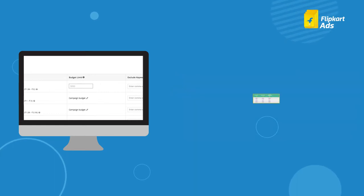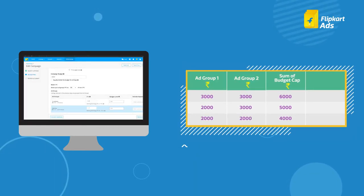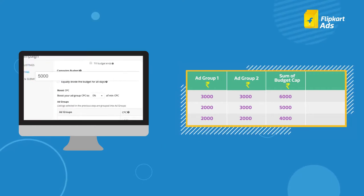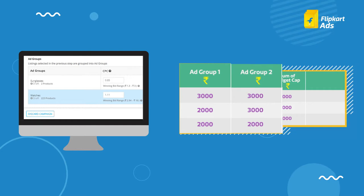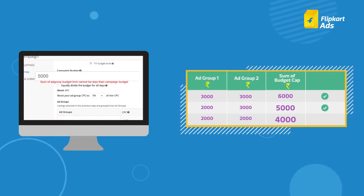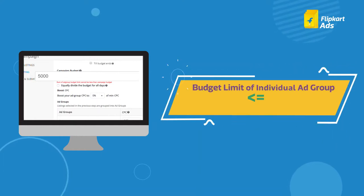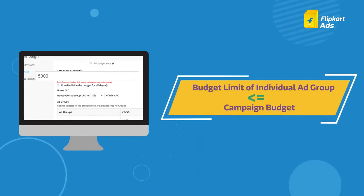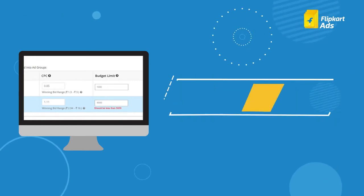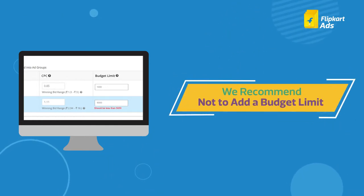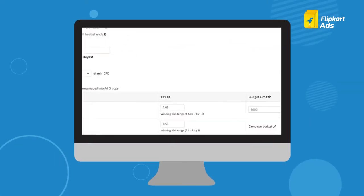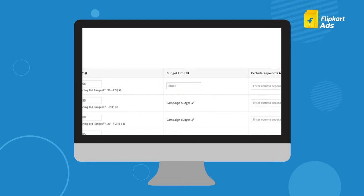If you choose to add a budget limit, please note that the sum of the budget limits of each ad group should always be greater than or equal to the campaign budget. For instance, if you have a total campaign budget of Rs. 5000 and two ad groups, the sum of your budget limits cannot be less than 5000. However, the budget limit of an individual ad group cannot exceed the campaign budget amount. We recommend you not add a budget limit. You can edit the campaign budget and budget limit anytime until the campaign is completed.